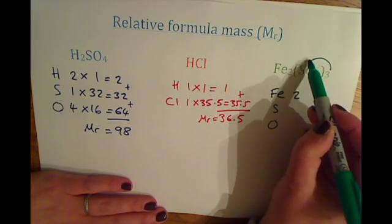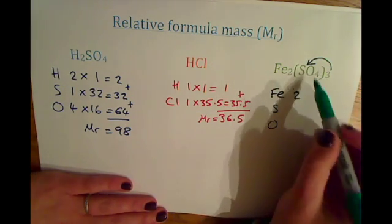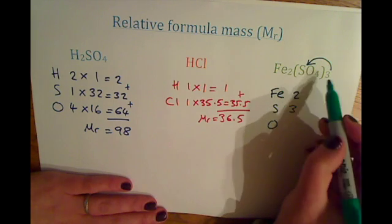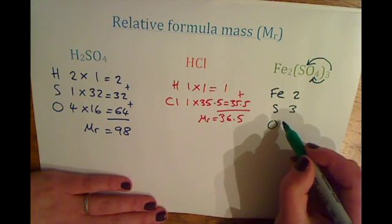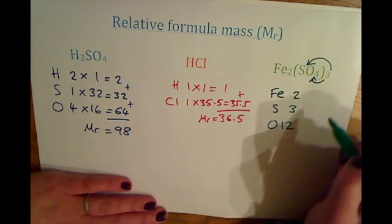And if you have a look at the brackets, you've got three times sulfur, so three times one is three. And three times four oxygen, so you've got 12 oxygen.